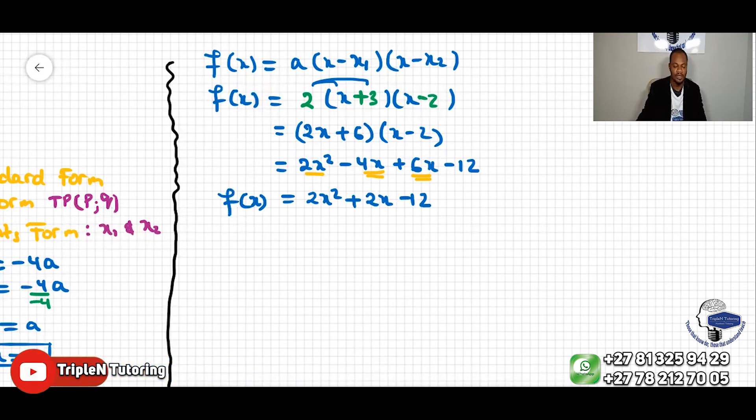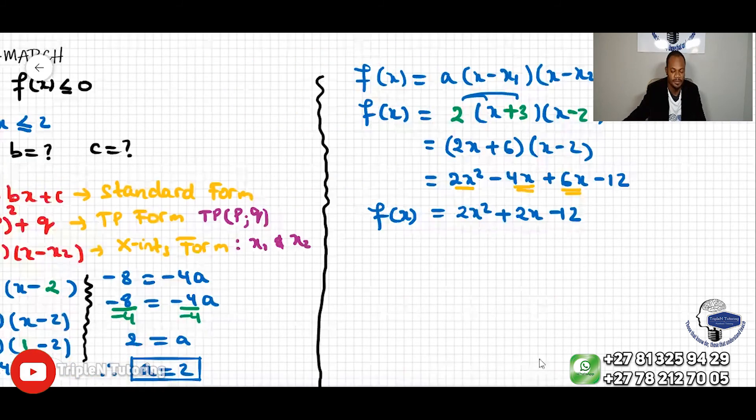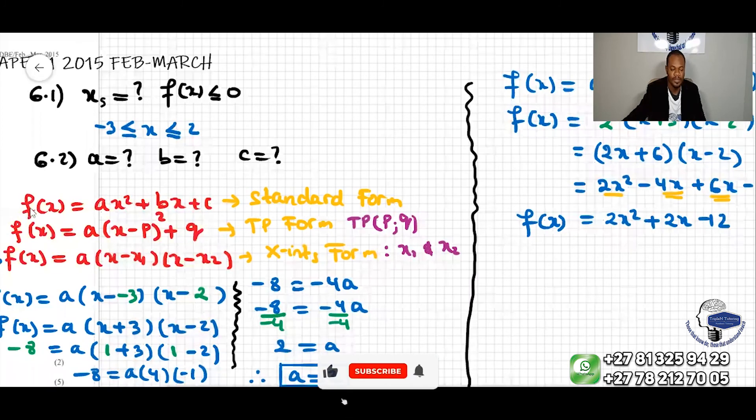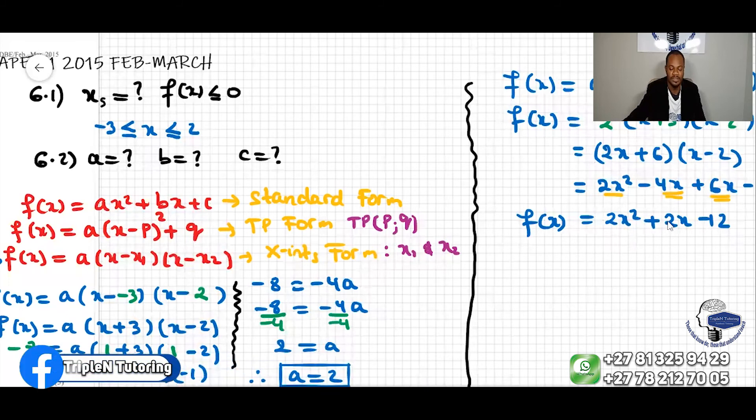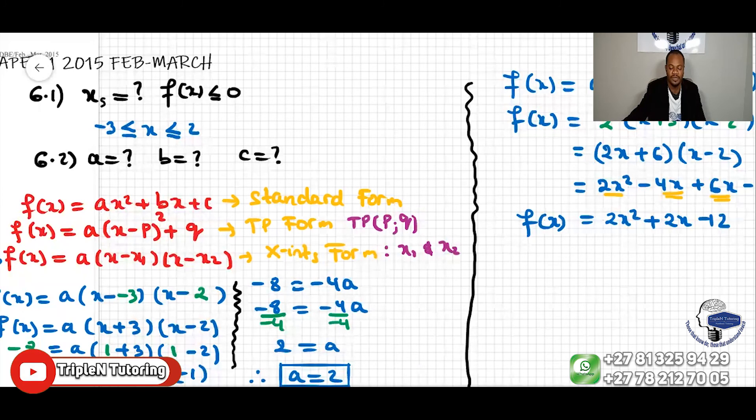Now we can see, in comparison with the first equation here, f(x) = ax² + bx + c, the standard form. We worked out this, because we have a which is 2, b is positive 2, and then c is -12.